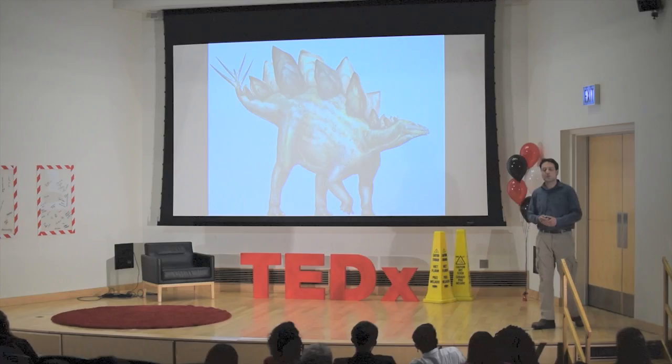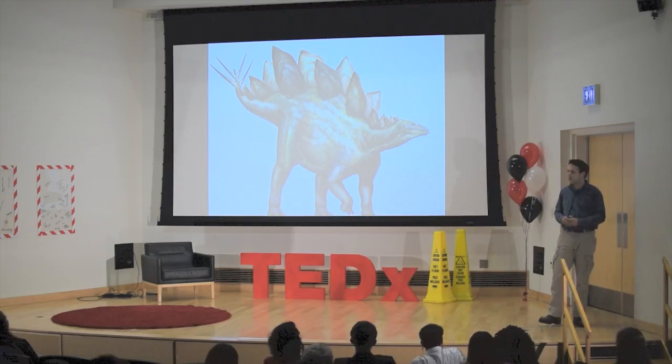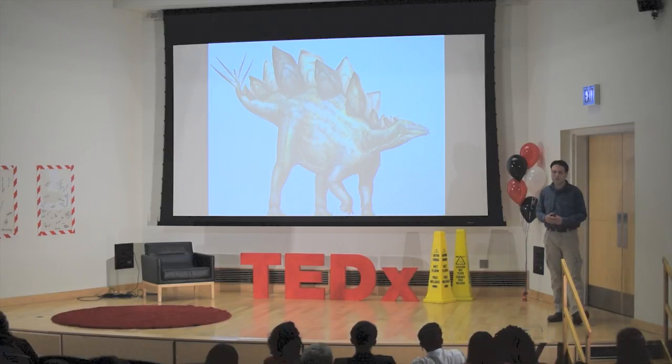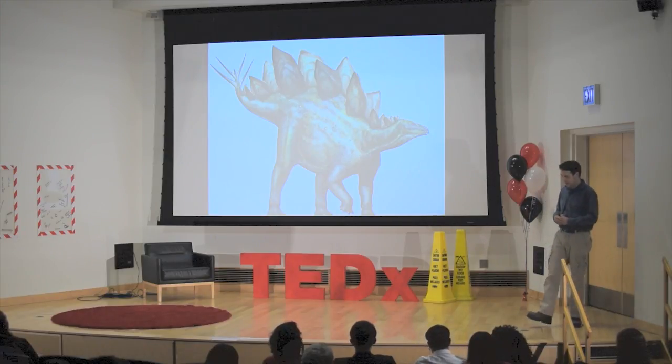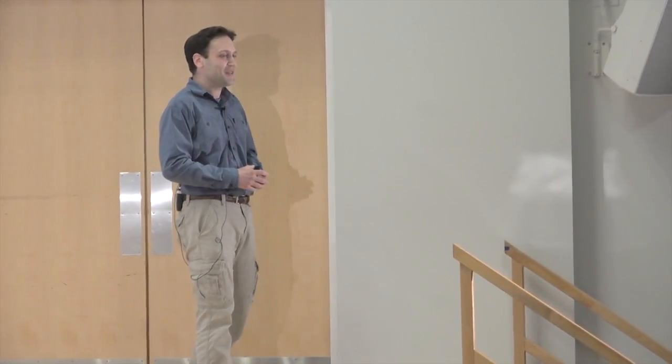Here is another dinosaur you are probably familiar with. This one lived a long, long time before T-Rex. It lived about 80, well actually more than 80 million years before T-Rex. That really gives you an idea of how successful dinosaurs were. They were around for a very long time. T-Rex lived about 67 million years ago. So T-Rex is closer in time to us than it is to this other type of dinosaur.